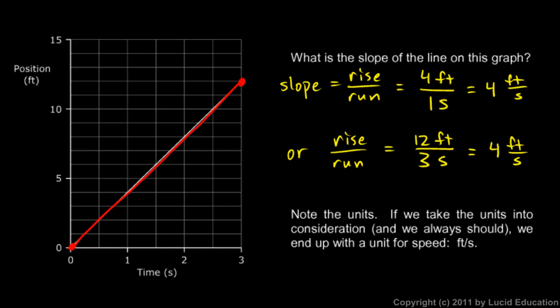And note those units. If we take the units into consideration, the feet here and the seconds there, and we always should take the units into consideration. When we calculate the slope, the rise is in feet and the run is in seconds. And we very naturally end up with the unit for feet per second. And you recognize that as a unit for speed.